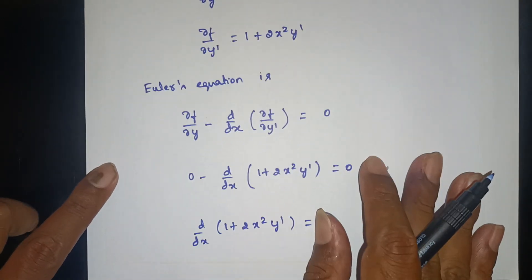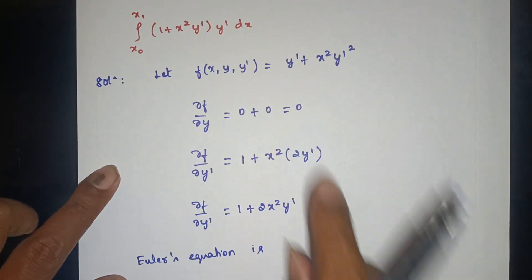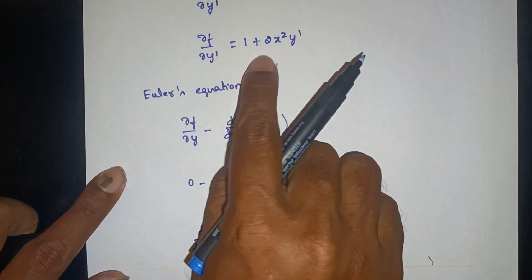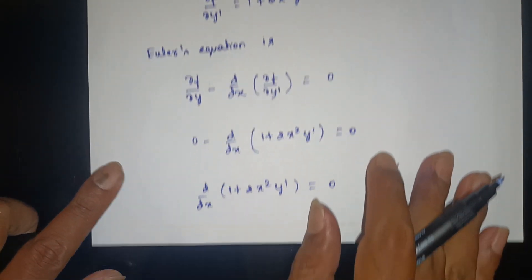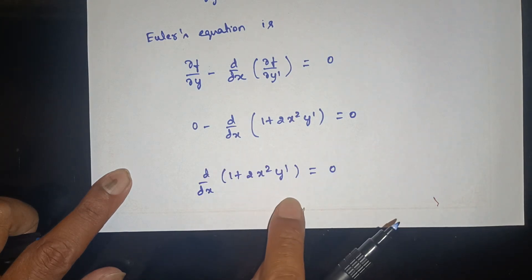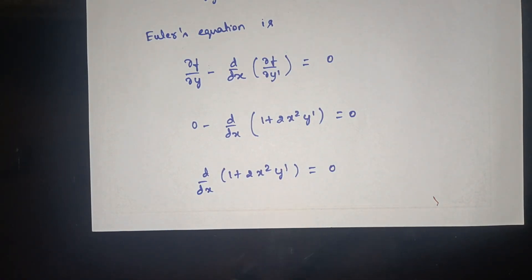From Euler's equation, 0 − d/dx(∂f/∂y') = 0, so d/dx(1 + 2x²·y') = 0.